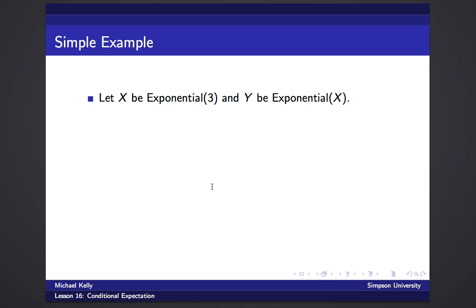Okay, so for a simple example, let's suppose x is exponential 3, and y is exponential x. So whatever value x takes on, that's the parameter for y. So if we're conditioning on x equals 3, then the expected value of y given x equals 3. Remember, if it's exponential lambda, then the expected value is 1 over lambda. So if we have x equals 3, that means that y is exponential 3, and so the average value of y is 1 third.